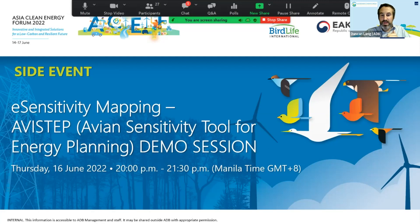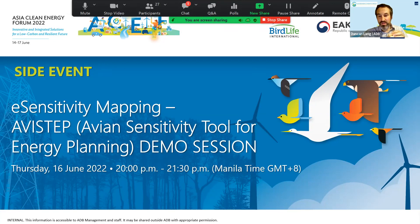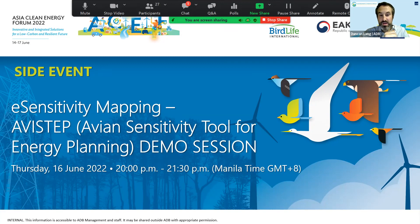We're doing a live demo of this eSensitivity mapping tool. It's called Avistap, and that stands for the Avian Sensitivity Tool for Energy Planning. You will hear more in a minute from Tris as to why we've given it that name. The demonstration session will be facilitated by Beatrice Gomez from ADB and Tris Ellenson from BirdLife International, who will be the demonstrator.